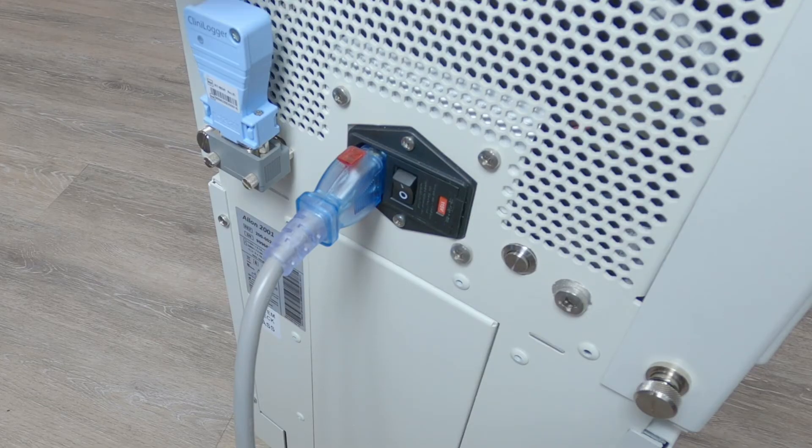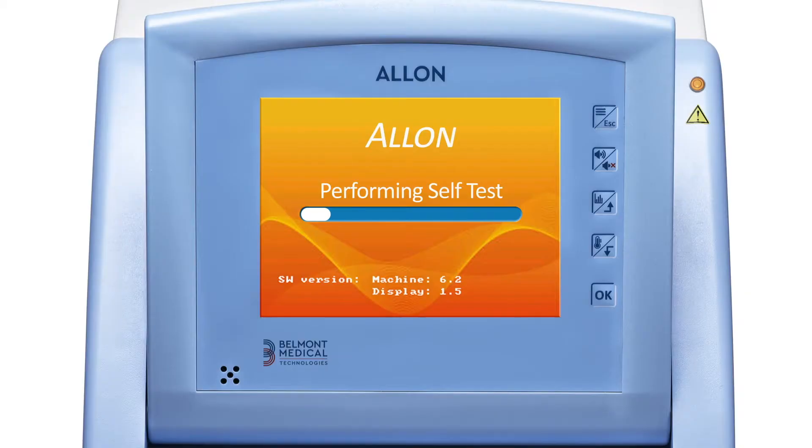Now that the wrap is connected, turn the machine on. The system initiates a self-test. It will take a few minutes to assure the system's safety.